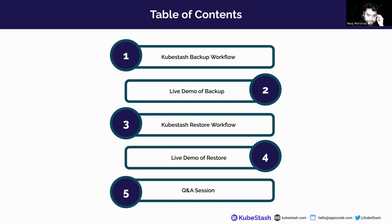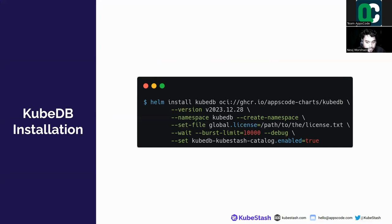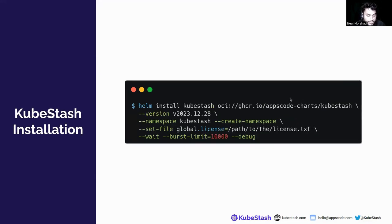First of all, you have to install KubeDB. For this purpose, you can install it using the Helm commands shown here. You can check out our website kubedb.com for more details and documentation. For installation of KubeStash, you can follow these Helm commands as well. Again, you can check more details on kubestash.com.